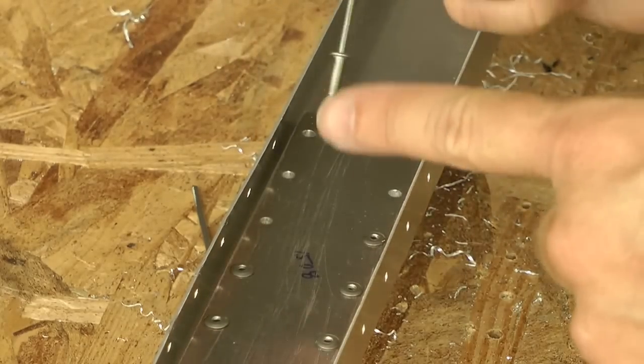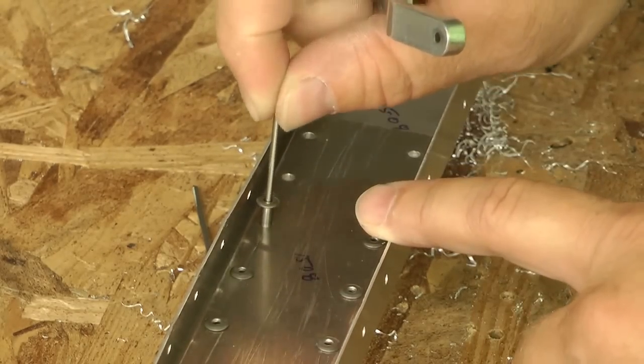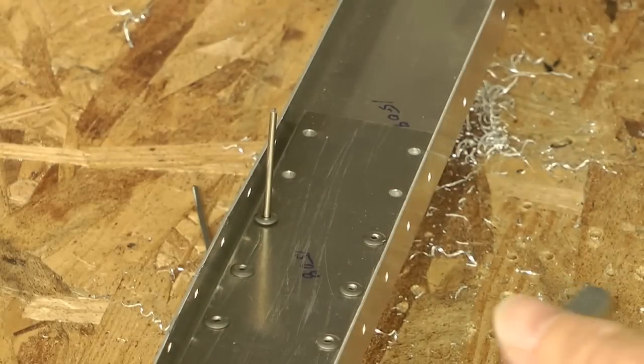Here's an example where it's a little tight to get a rivet in. The hole is very close to the flange, and when we grab our rivet gun,